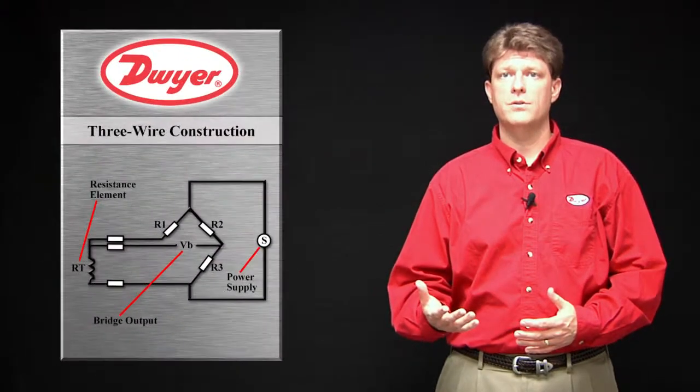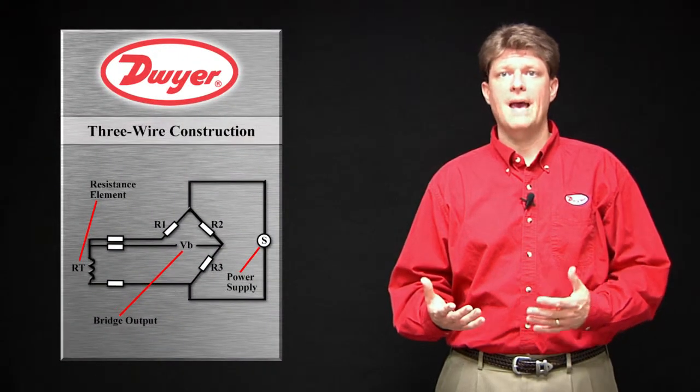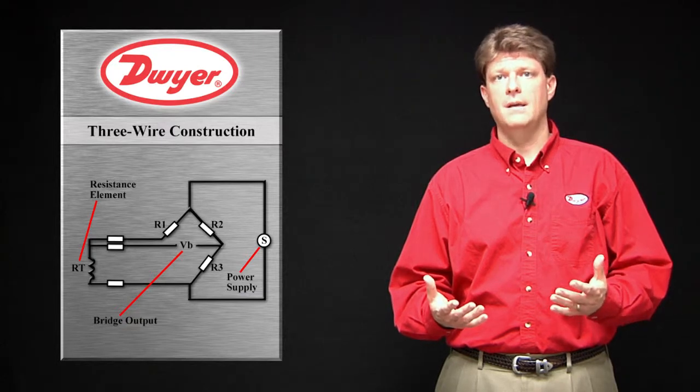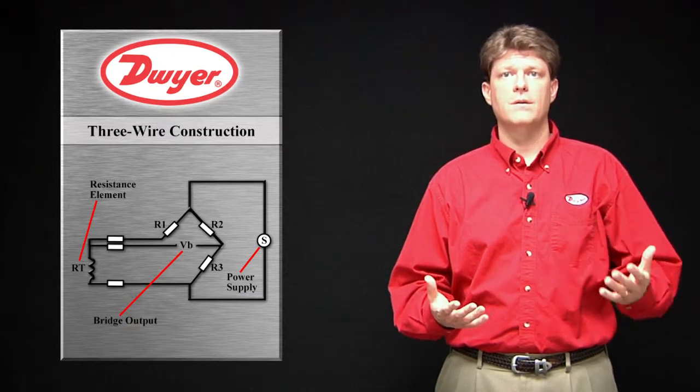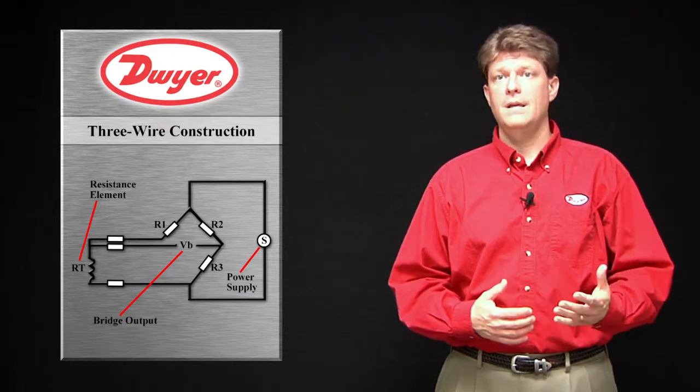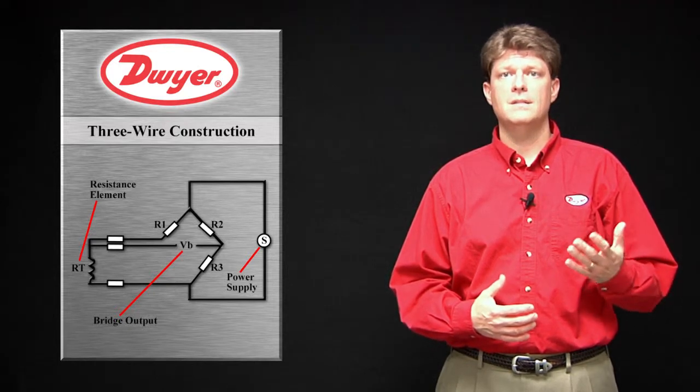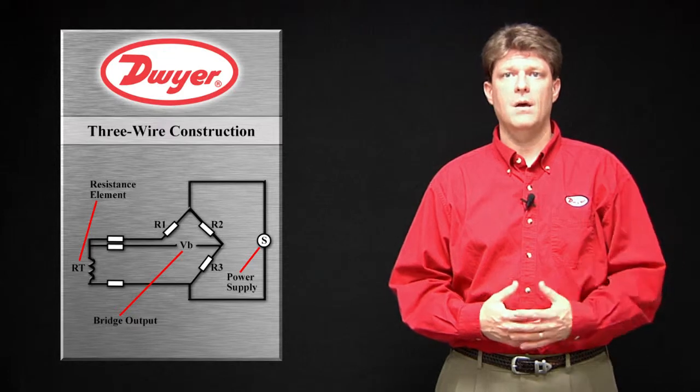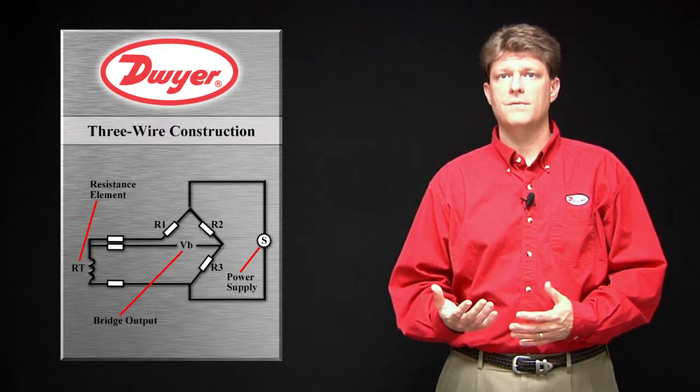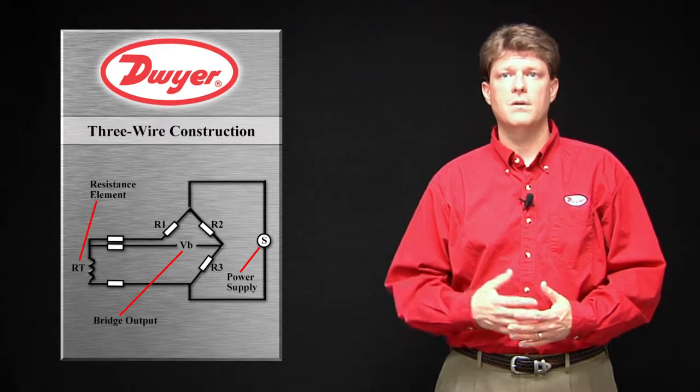3 wire construction modifies the Wheatstone bridge circuit by adding another lead wire from the RTD, minimizing the effects of the lead resistances. The leads are matched so that their resistances are all equal and the resistance in each arm of the bridge balances out. Typically, this type of circuit can be used with up to 600 meters of cable.